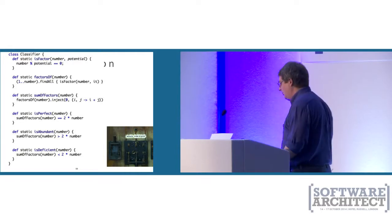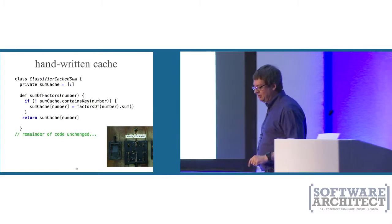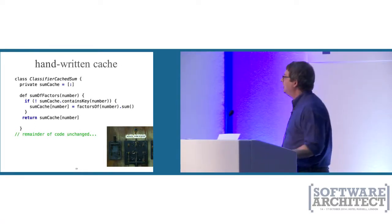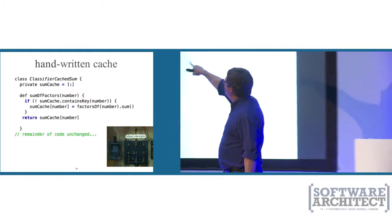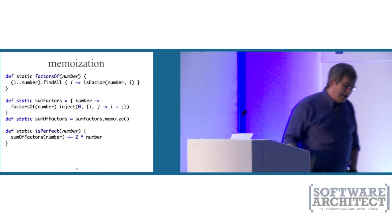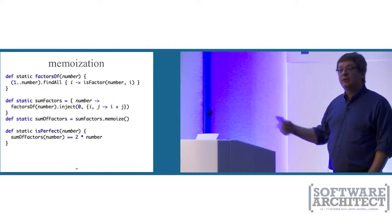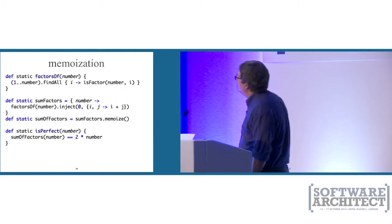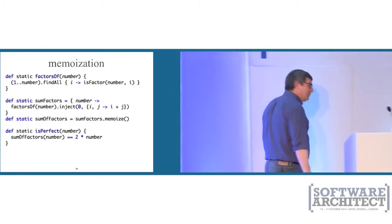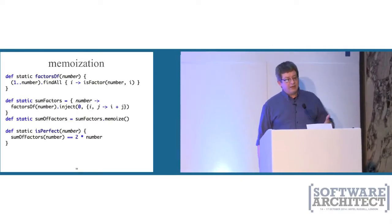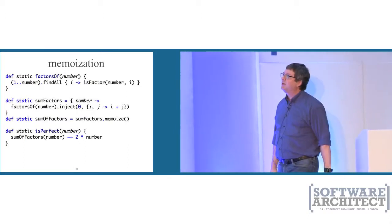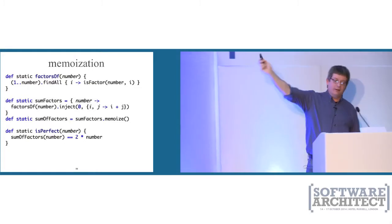Here's an even cooler example: memoization, which is very easy to implement in just about any functional language. This code classifies integers based on certain criteria. The method I care about is 'sum of factors' — it goes through and sums all the factors of a number. Maybe I've decided I don't want to recalculate that over and over — summing is an expensive operation for really huge numbers — so I want to calculate the sum of a particular number once and then cache it. In Groovy, you'd normally write a hand-written cache using a HashMap.